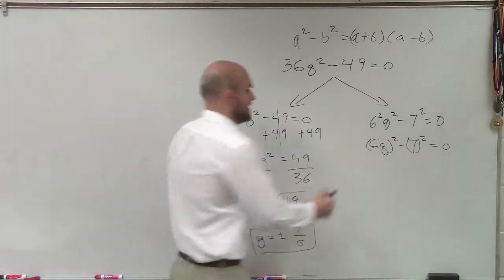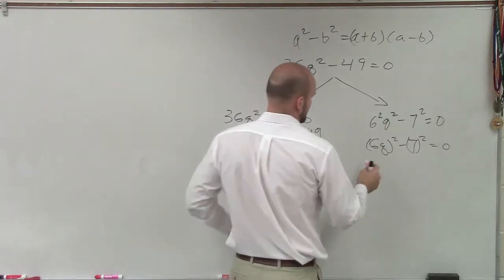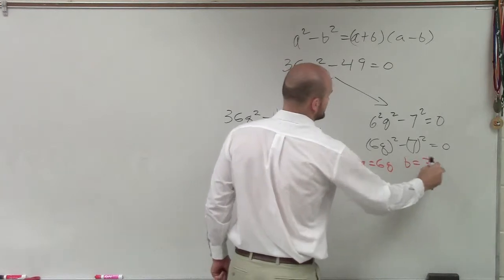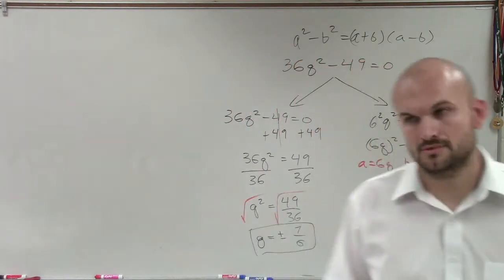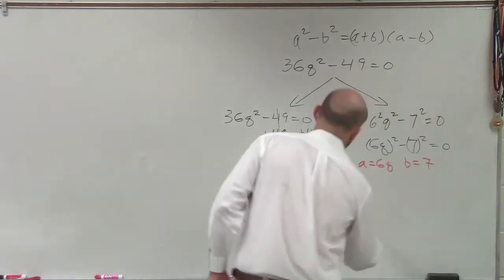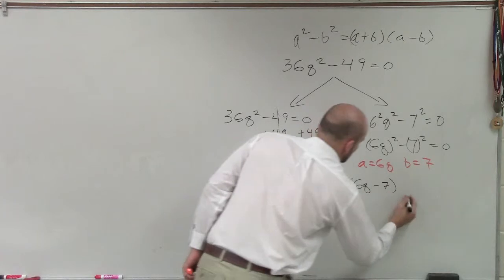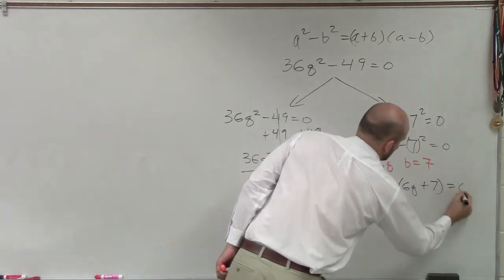So therefore, I can just factor this. So I can say, in this case, I could say, a equals 6q and b equals 7. Right? What you say, those are equivalent. So therefore, my factored form would be 6q minus 7 times 6q plus 7 equals 0.